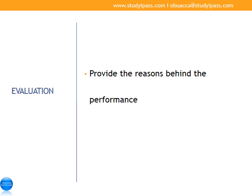The next driver is evaluation, which is about providing the reasons behind the performance. The number one reason why students fail is evaluation, because they fail to evaluate the performance. The most important thing to remember is that the examiners want you to tell them why the organization performed the way it did. For instance, it's not enough to state that earnings per share went up because the share price went up by 20%. The question they want you to answer is: why did the share price go up by 20%? What caused it? If you are able to provide a convincing answer, then you have met the evaluation requirement of Topic A.